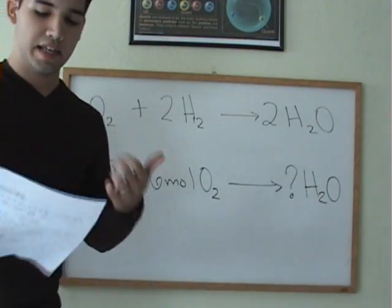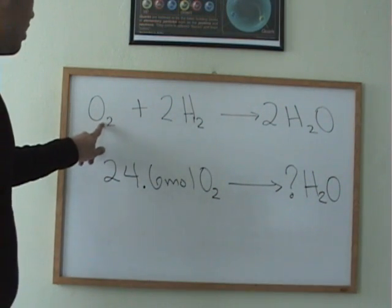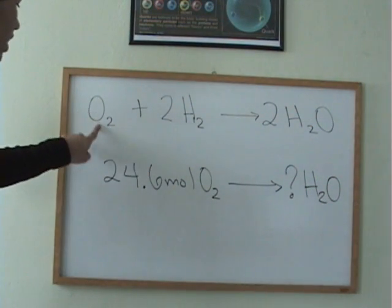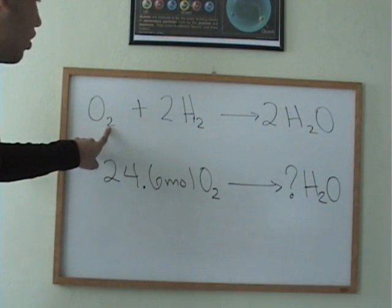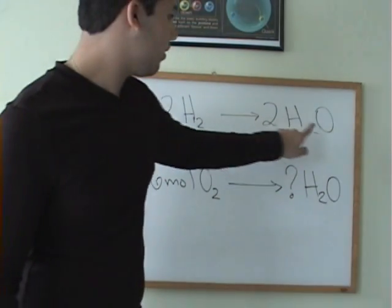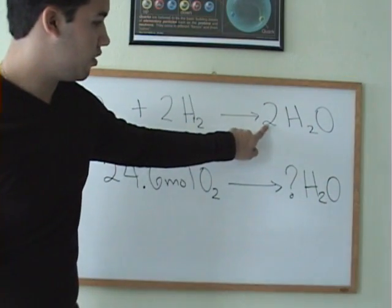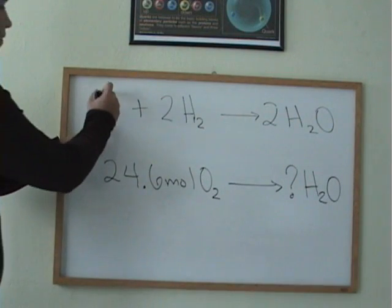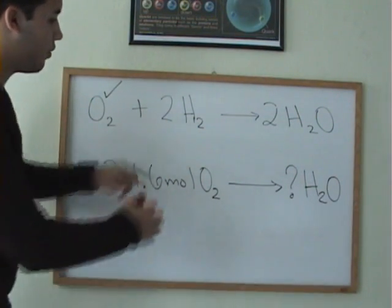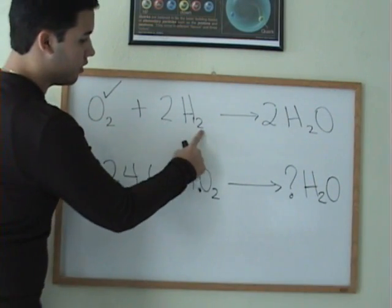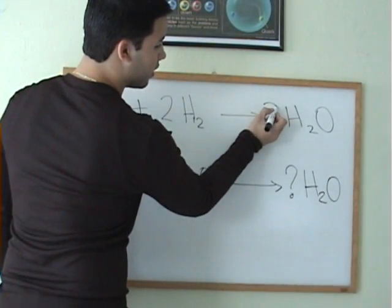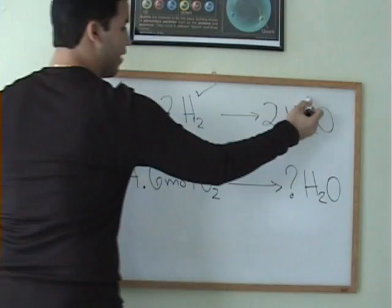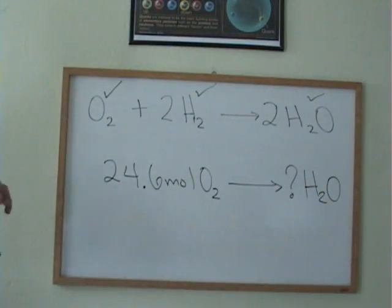The first step, before you even begin to solve this equation, is notice if it's balanced. That's the first step, based on our definition. Here we have two oxygens, and we go over here, and we have two oxygens, because of that two in the front. This is checked. Then we have four hydrogens. We come over here, and notice, it's two times two. So, four hydrogens. That's balanced. Everything is balanced. So, now, we need to solve it.